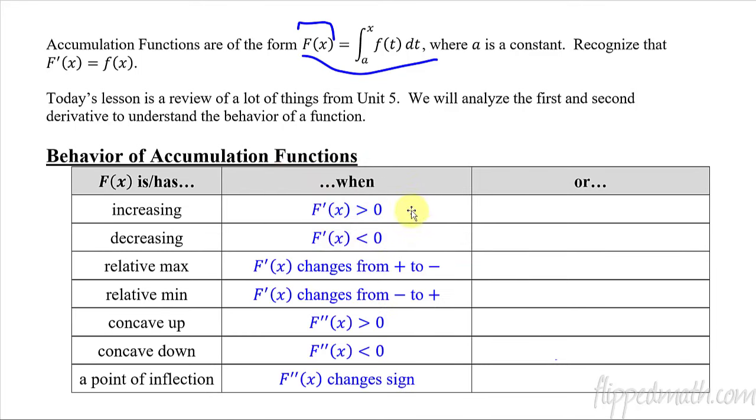And there's what you should have come up with. Something about with f prime changing signs. When it's maximum, it goes from positive to negative and so forth. Concave up, concave down, and the point of inflection, second derivative is going to change signs.